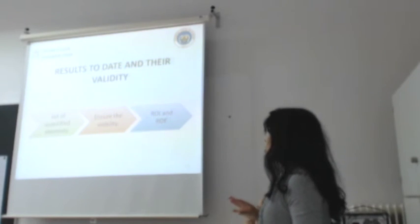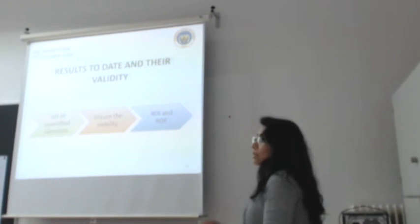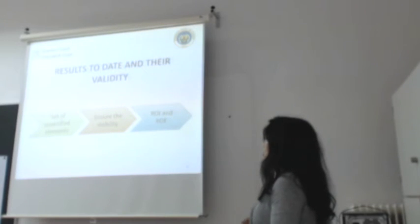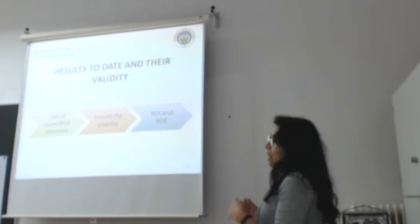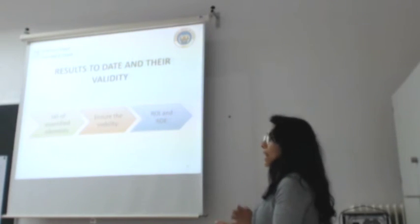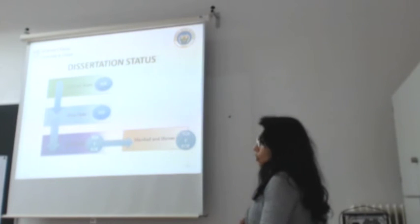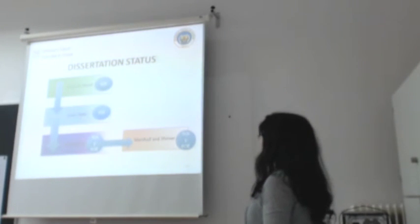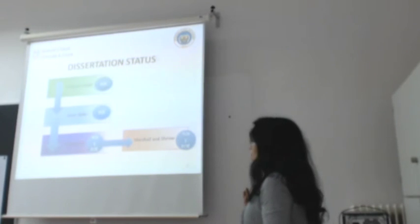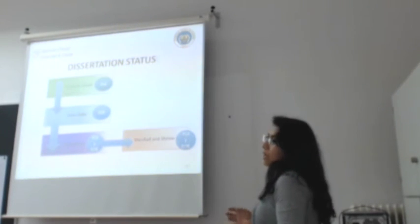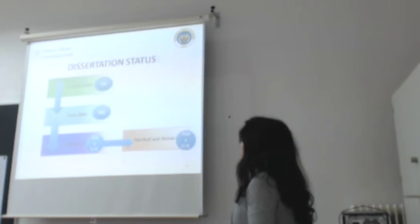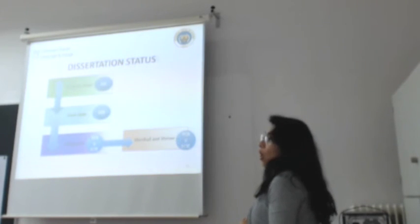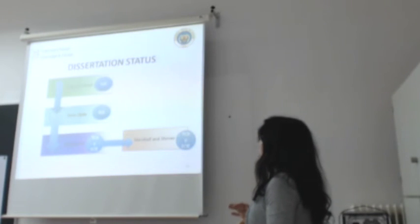We now have a set of quantified elements. The next step is to verify their viability, ensure these elements are viable, and then apply them to quantify ROI and ROE. The idea begins in the methodology of Joseph Duart, who used ROE to quantify elements around education.